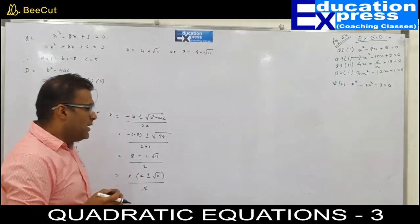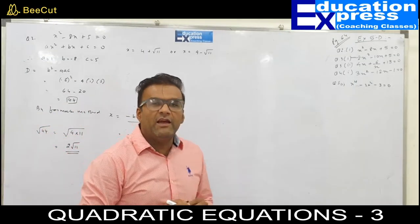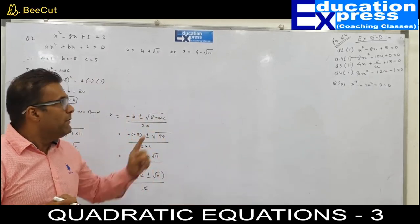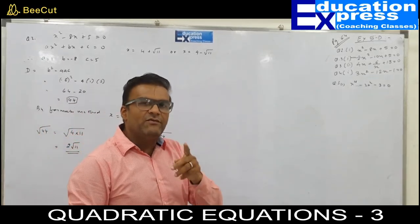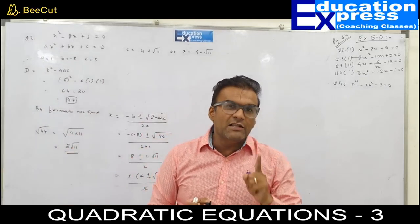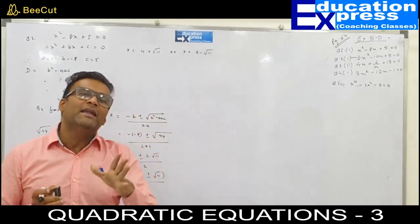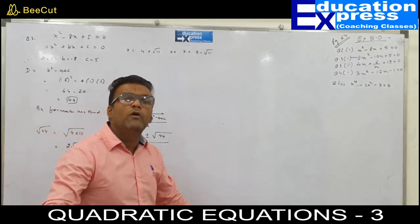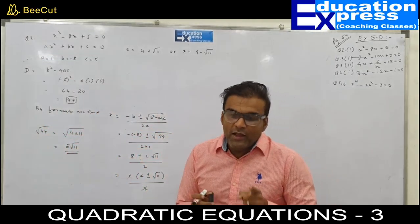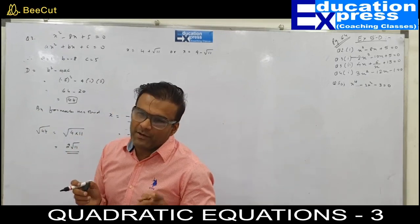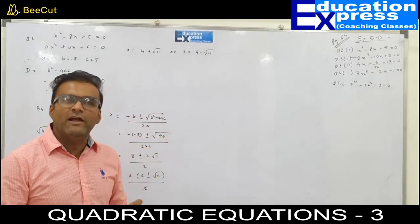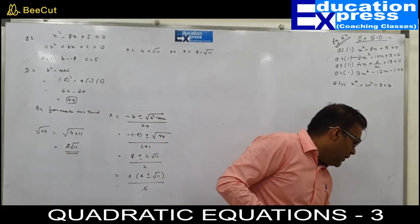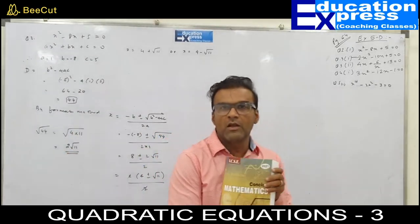Point to be noted: in previous questions we left the answer as root 11 only. But in question number 2, it is specifically mentioned that the answer needs to be obtained only up to 1 decimal. So I have to find the value of root 11. The value of root 11 will be given to you in examination conditions.